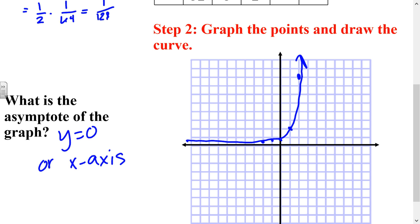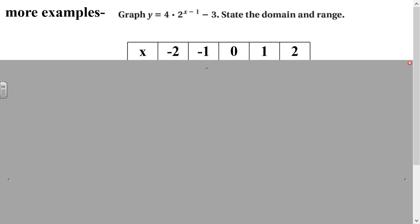Our graph takes on a shape that looks kind of like a banana. Something I always like to do is draw a dotted line across the graph at the asymptote so I know my graph cannot go beyond that point. That way when I'm connecting my points, I have an idea of where the curve flattens out. Let's try another graphing situation.